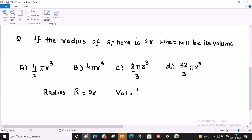Volume is 4 by 3 pi R cube. Now R value is 2R, so we will write it as 2R whole cube.